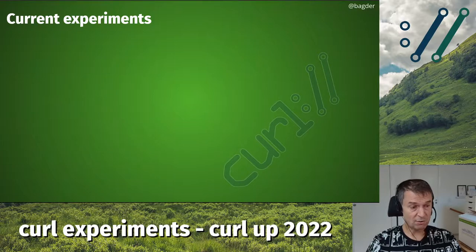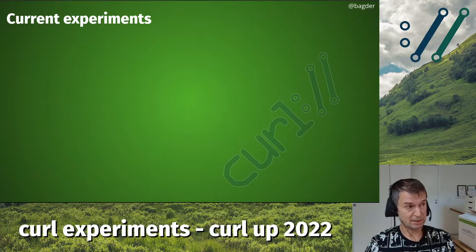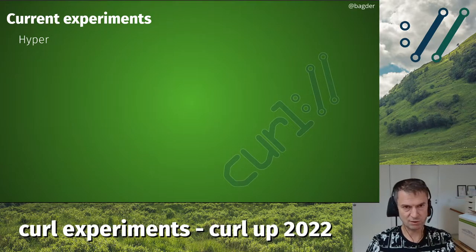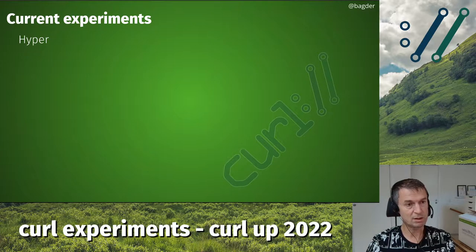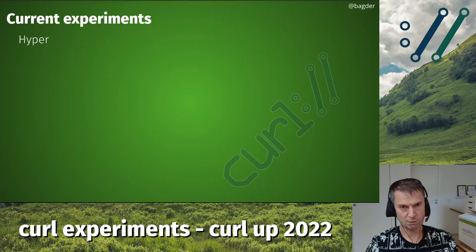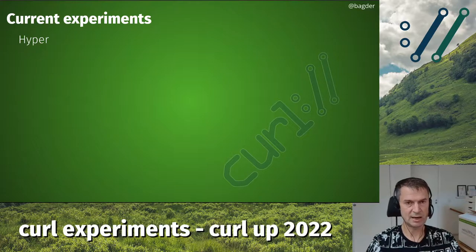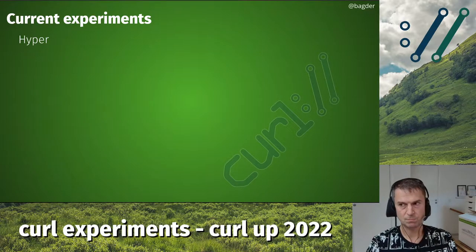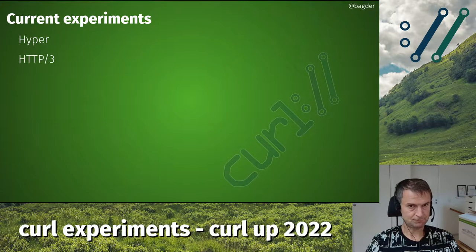Currently we have a few different experiments going. We have for example the hyper backend — it's support for this Rust-written HTTP library, a new HTTP backend we've been working on the last few years. Basically you build curl to use hyper instead of native code for a huge chunk of the HTTP handling in the code. It also replaces nghttp2 as the HTTP/2 library.